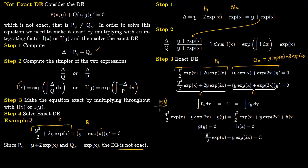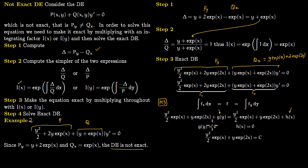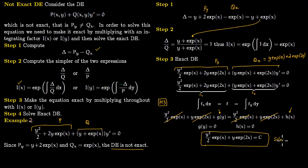We solve by Method 3. Setting f sub x and f sub y from the new exact equation, we integrate f sub x with respect to x to get one expression with g of y, and integrate f sub y with respect to y to get another expression with h of x. After cancellations, g of y equals zero and h of x equals zero. Setting either side equal to a constant gives the solution to the differential equation.